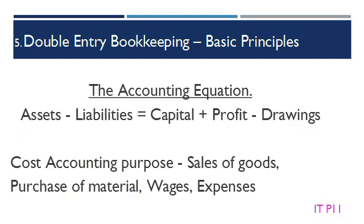To recap on the accounting equation: Assets less liabilities equals capital plus profit less drawings. For cost accounting purposes, we will be concerned mostly with the sales of goods, the purchase of material, the payment of wages, and the treatment of expenses. These transactions all affect the accounting equation.